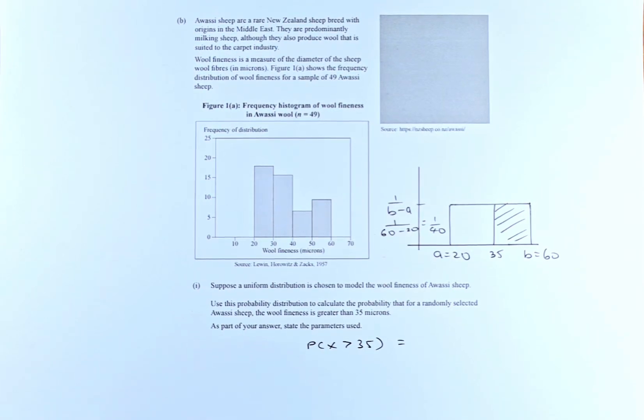Good day and welcome to video number 3 of the 2023 NCEA Level 3 statistics paper called Applied Probability Distribution to Solve Problem. This is question 1B part 1.